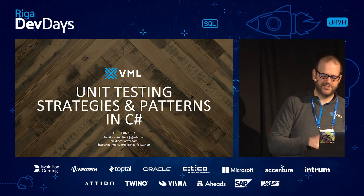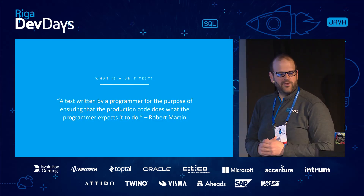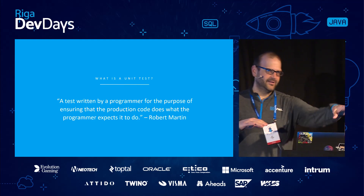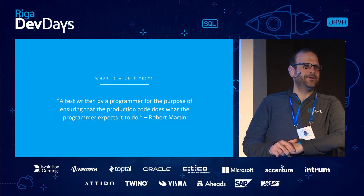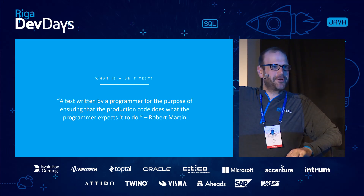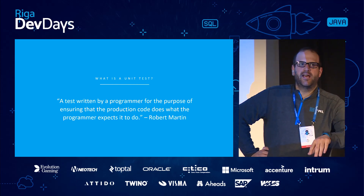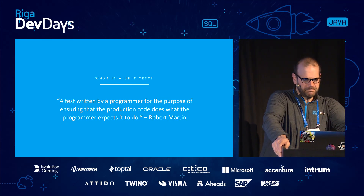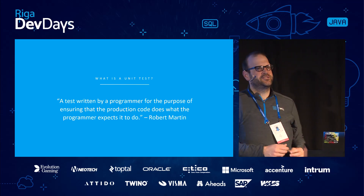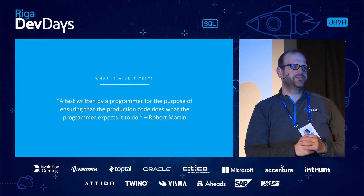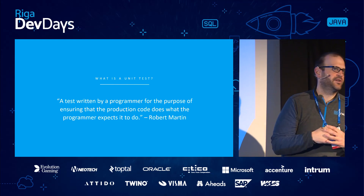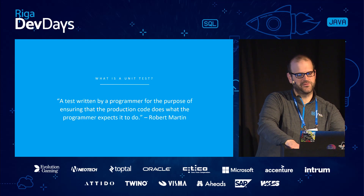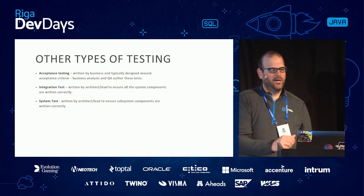First, let's level set. Tuesday night I was having a fight with other speakers about the definition of unit testing. So: what I mean by unit test is a test written by a developer for a developer — quoting Uncle Bob Martin. It is designed to make sure the program does what it's supposed to do. It's for the developers; it's not necessarily for QA, your boss, the BSA, PM, or anybody else — just for the devs.